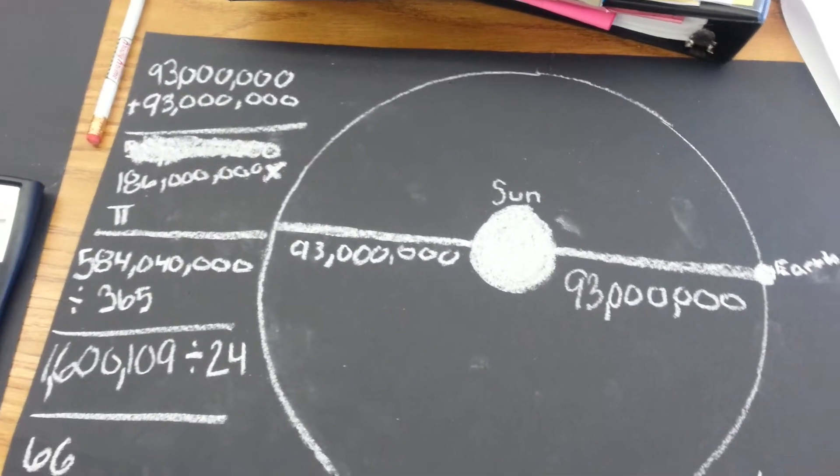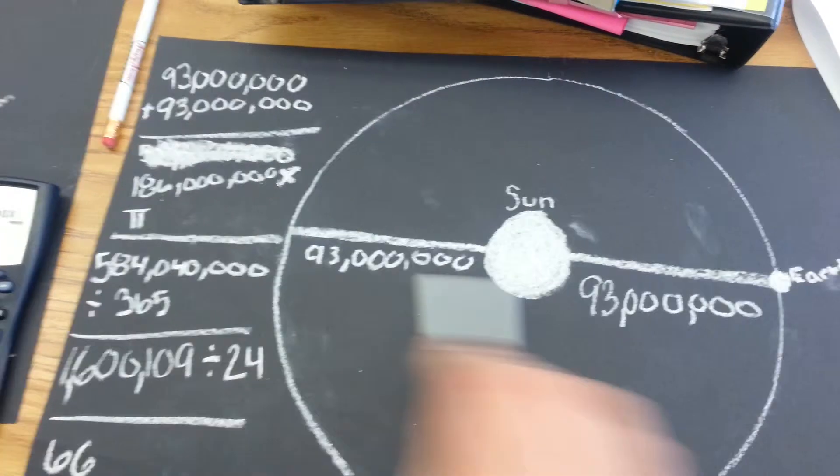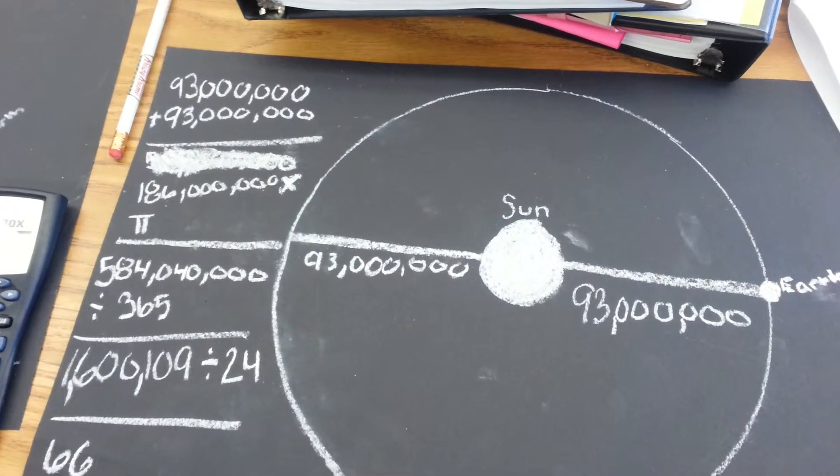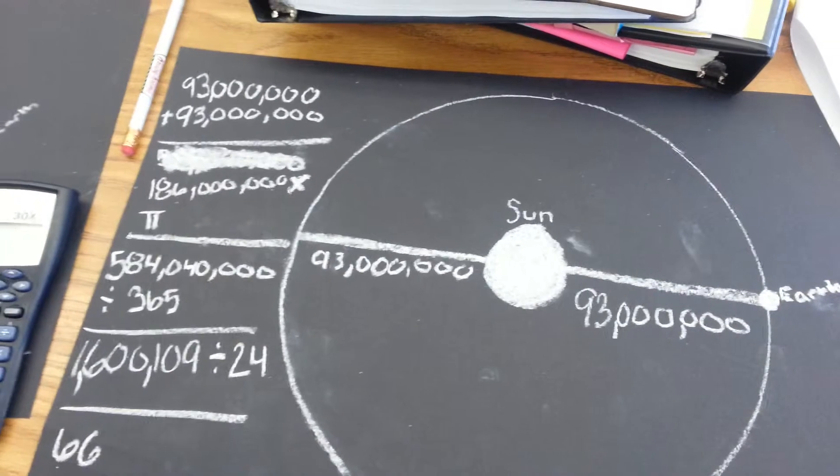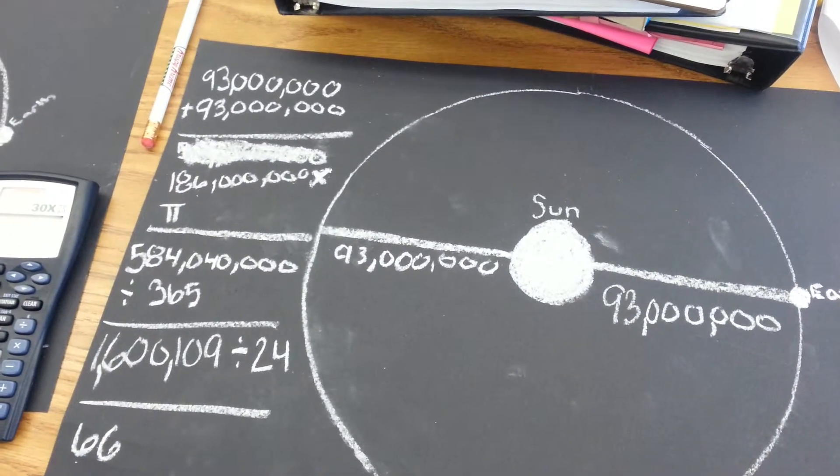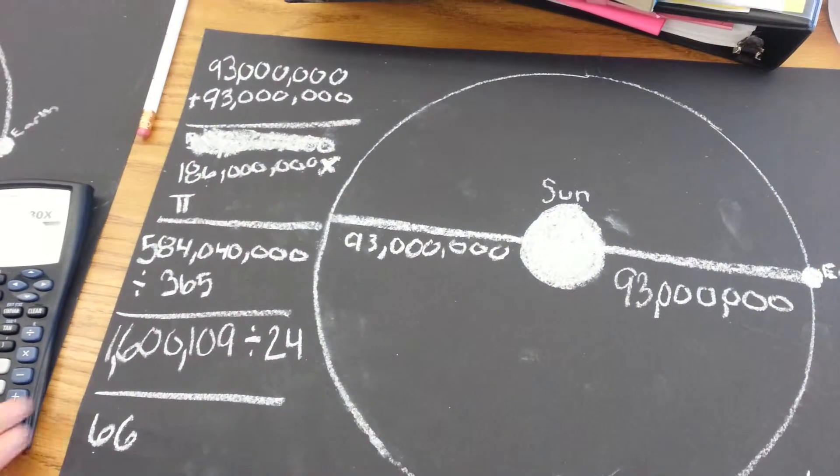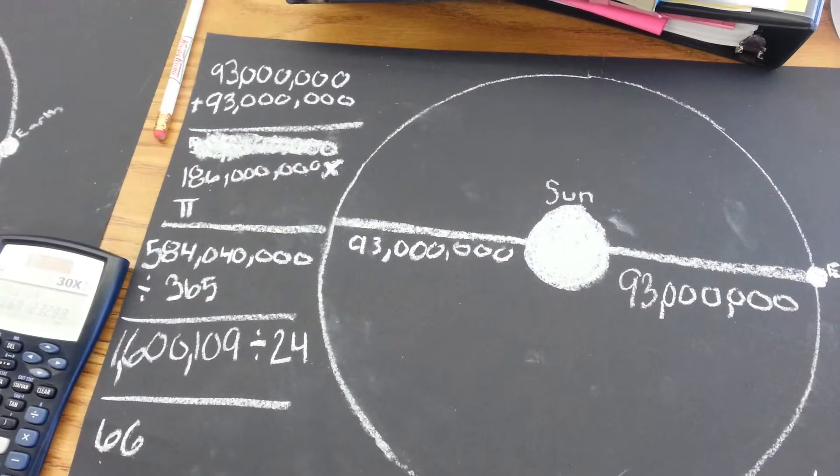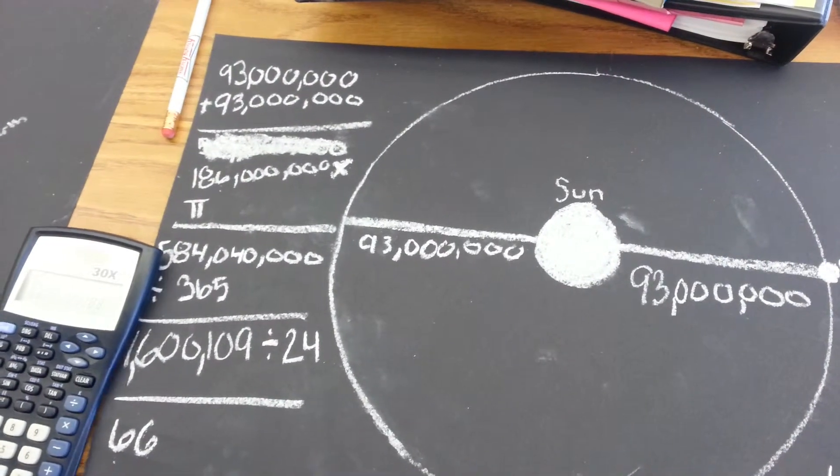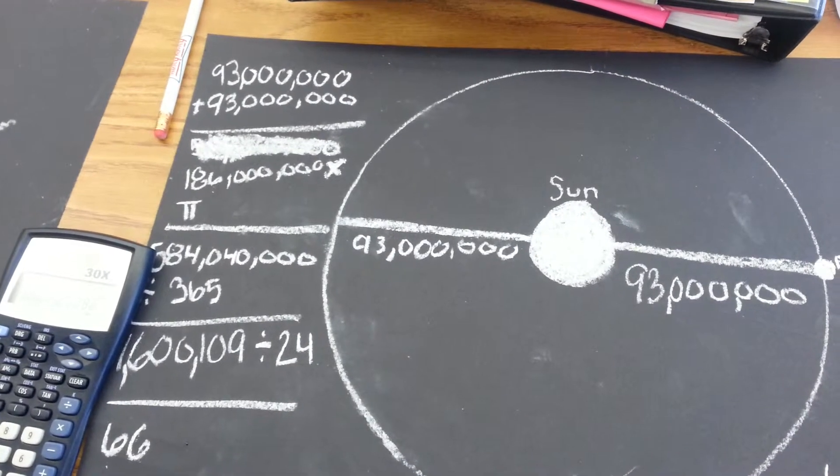I found out for this one, just to find the diameter, I got 186,000. 186 million times what? Pi. And I got 584,000,000 and 40,000 divided by 365 for a whole year. And I got 1,600,109.